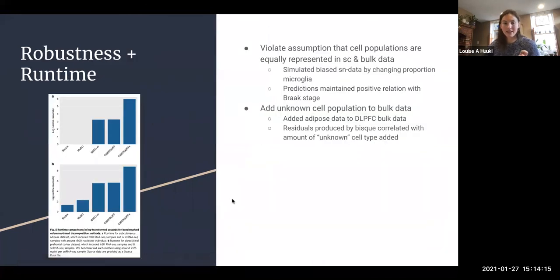Then a couple other points they make. I thought this was neat—they checked out what if we break the rules that we assume. One thing they do is violate the assumption that cell type proportions are equally represented in the bulk data. They changed—they up and down sampled for microglia cells in the single nucleus data so it's either under or over represented.